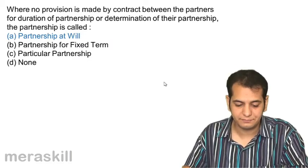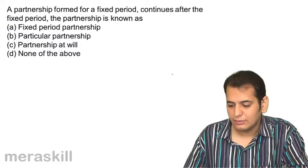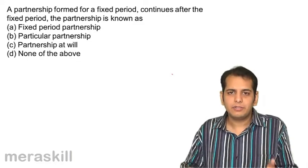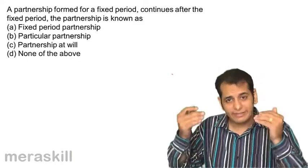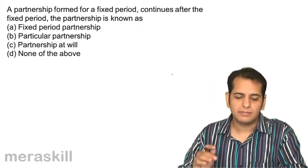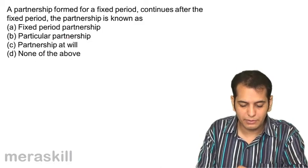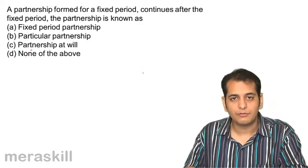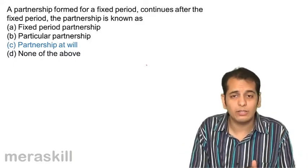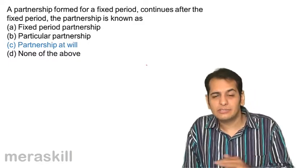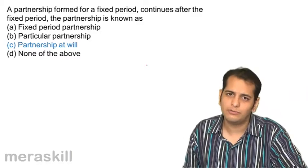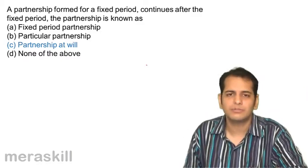Next question: A partnership formed for a fixed period continues after that fixed period — the partnership is now known as what? Let's say A and B got together to sell shoes for one year, and that one year has elapsed yet they are continuing. The answer is partnership at will. It has converted into partnership at will because it was to get over after that fixed period, but the partners still continue. Now they will continue till they decide to dissolve it — so it becomes partnership at will.